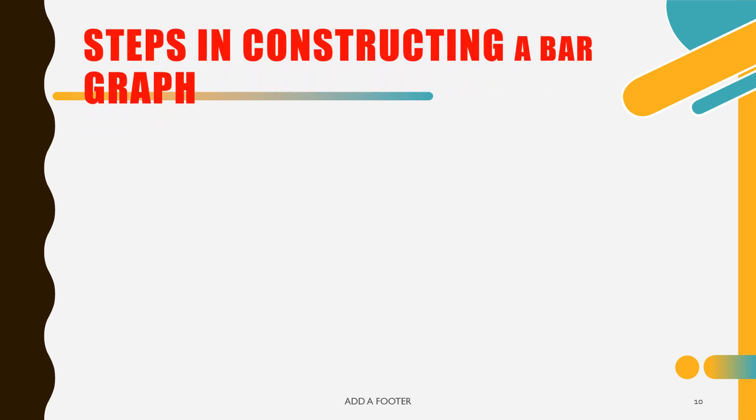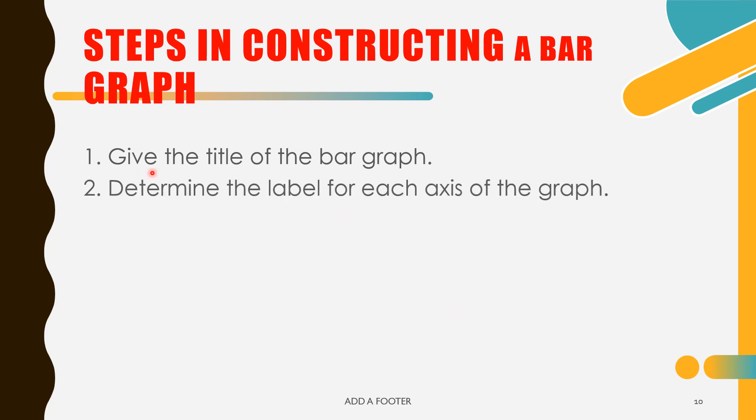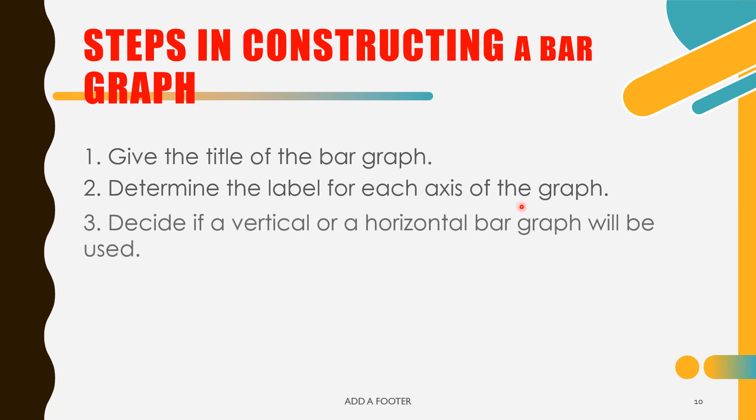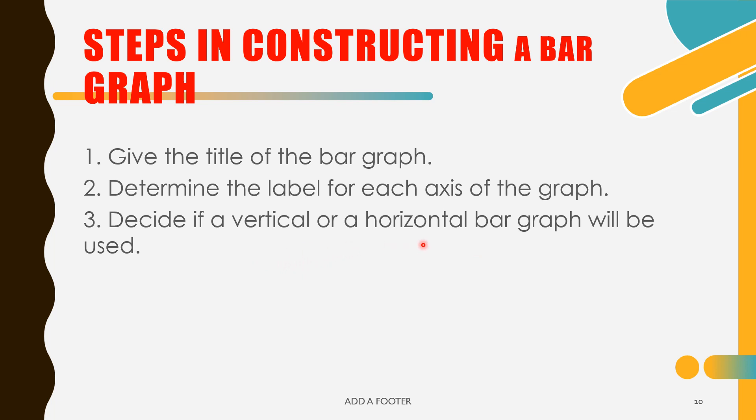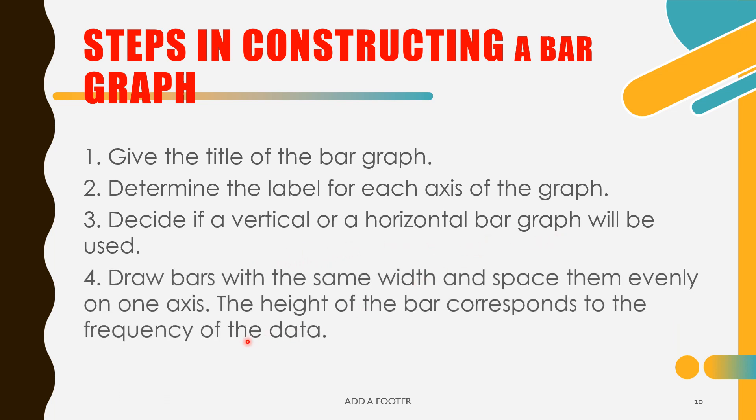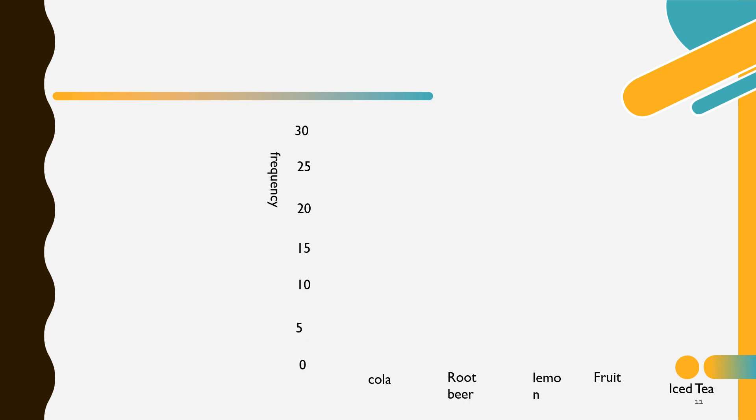We have steps in constructing a bar graph. Number one, give the title of the bar graph. Number two, determine the label for its axis to the graph. And three, decide if the vertical or horizontal bar graph will be used and draw bars with the same width and space them evenly on one axis. The height of the bar corresponds to the frequency.